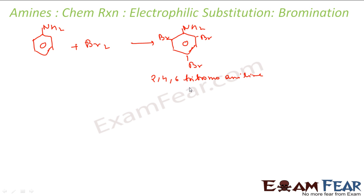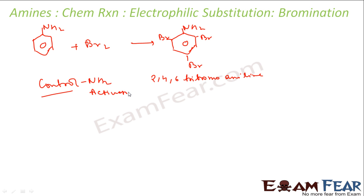The NH2 is a strong, powerful activating group. The moment I add bromine it substitutes at all available positions. I want to control the activating power of this NH2 group. For example, if I want bromine at only one position — say the para position — I need a strategy.